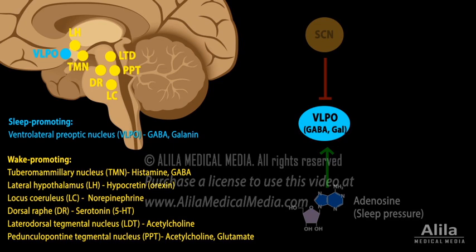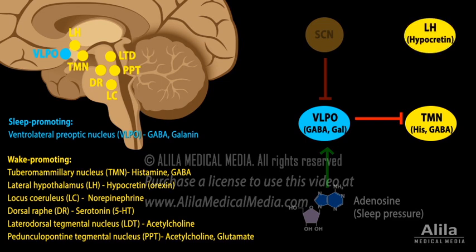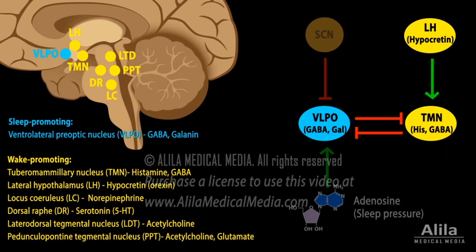Of these regions, it's important to note the tuberomammillary nucleus, TMN, and the hypocretin neurons. The TMN consists mainly of histaminergic neurons, but it also produces GABA that inhibits the VLPO in return. This mutual inhibition is the basis of the switch between sleep and wake. The hypocretin neurons stimulate the TMN and are crucial for maintaining wakefulness. The loss of these neurons results in narcolepsy.